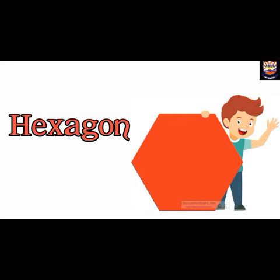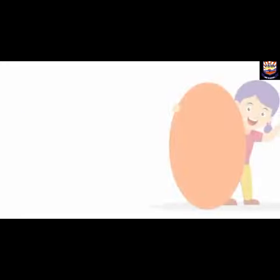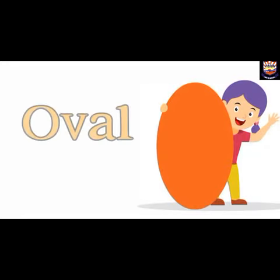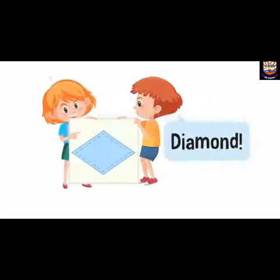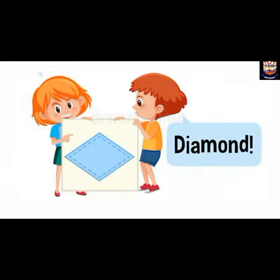This is a hexagon shape. A hexagon has six corners and six lines, all of the same size. And now this is an oval shape. You can see an egg — an egg has an oval shape.